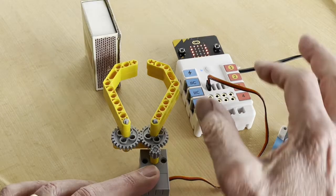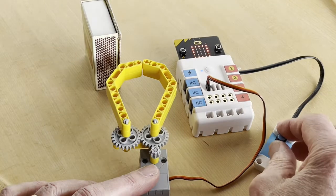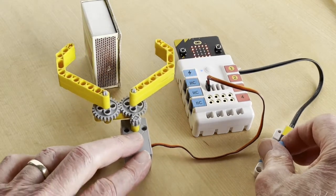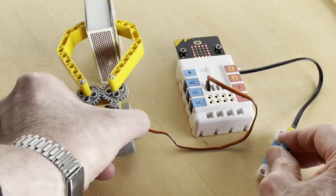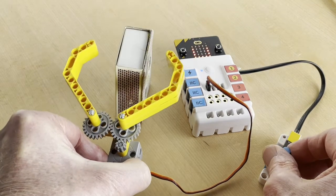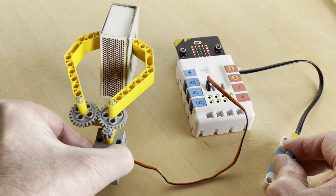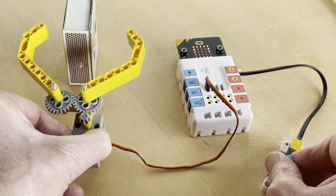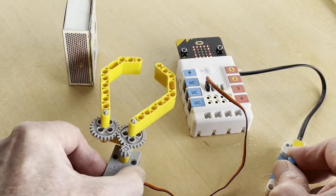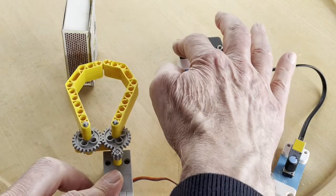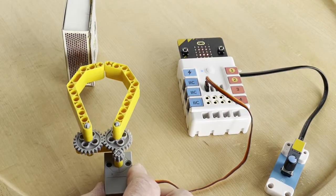Now the program has been expanded again so that the microbit can remember the different movements. We start by pressing button B to reset the memory. Then we teach the microbit a sequence by turning the potentiometer. When this has happened, we press button A and the sequence is repeated.